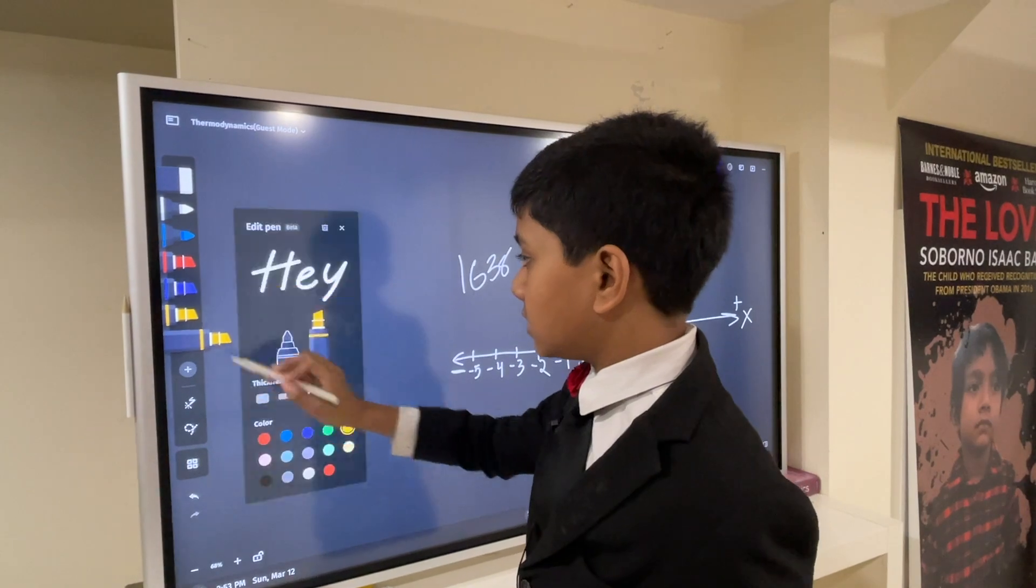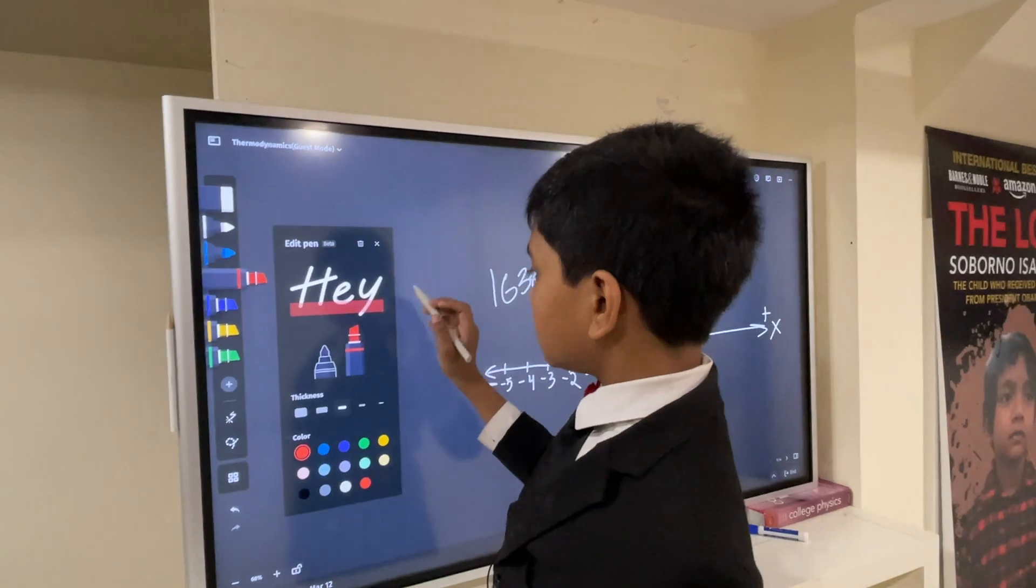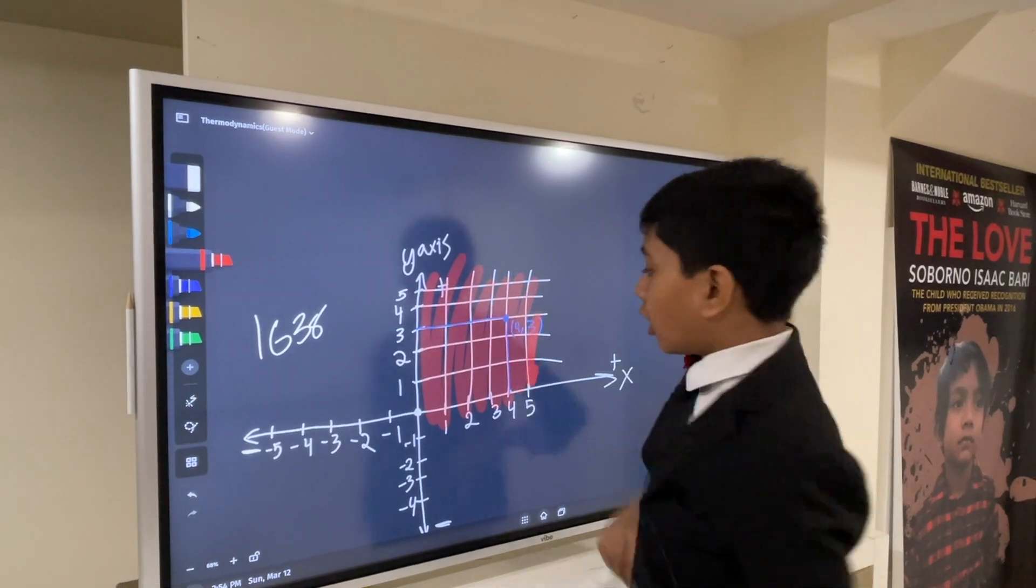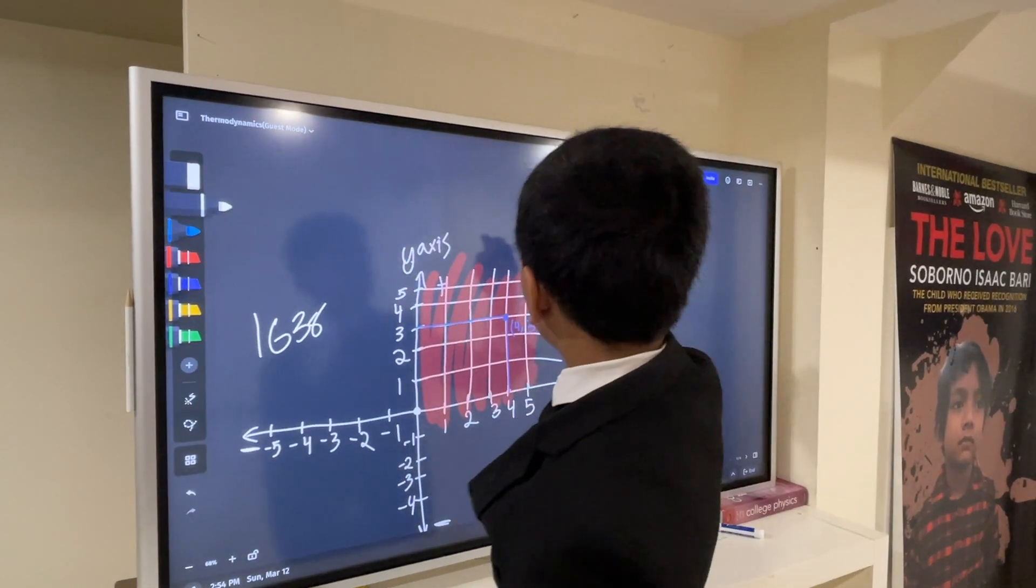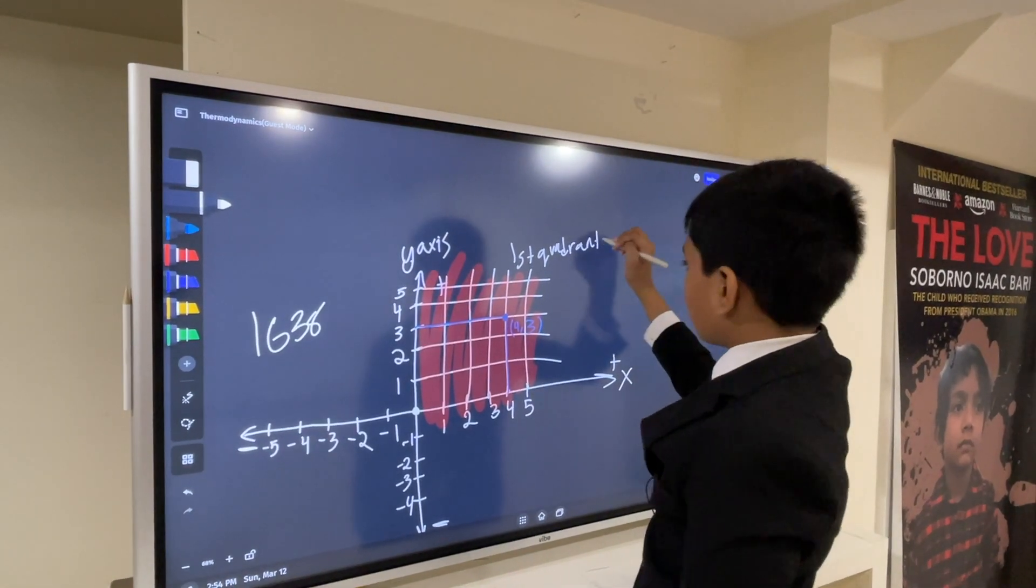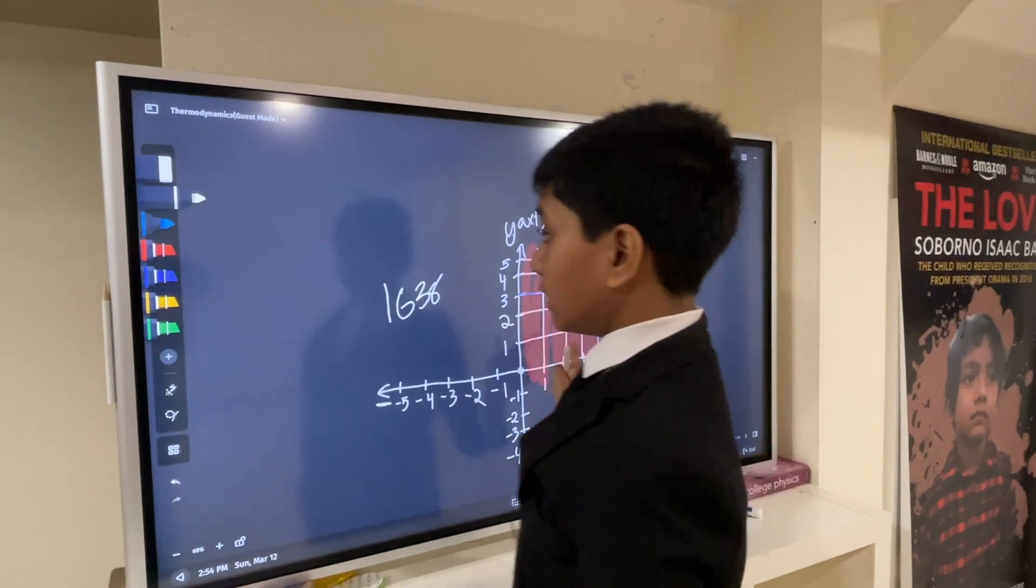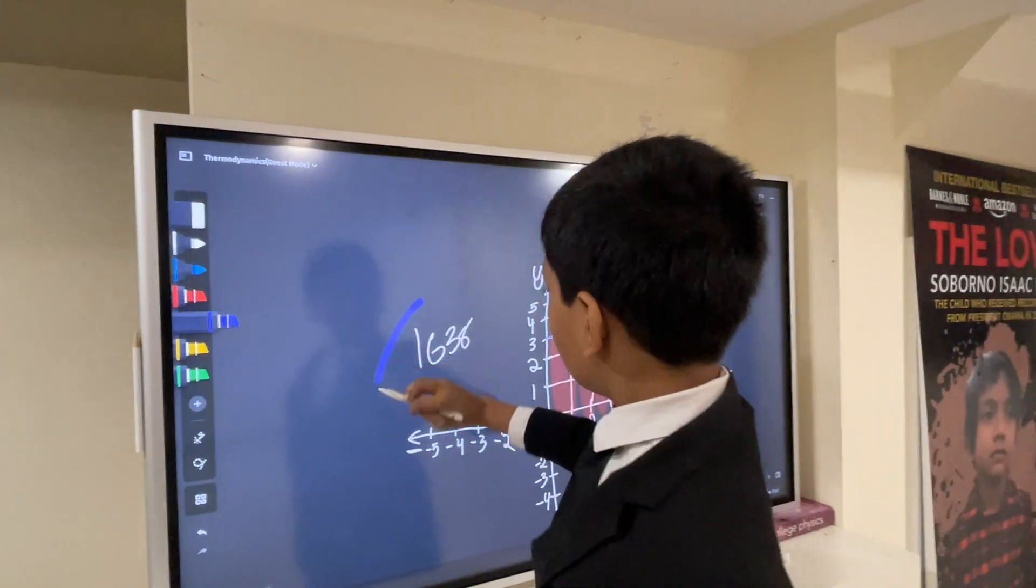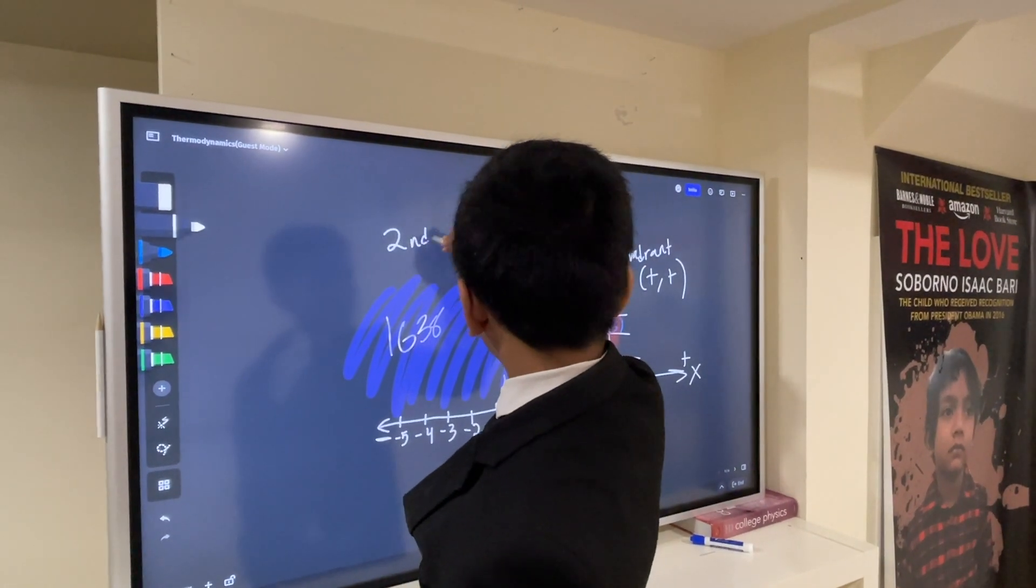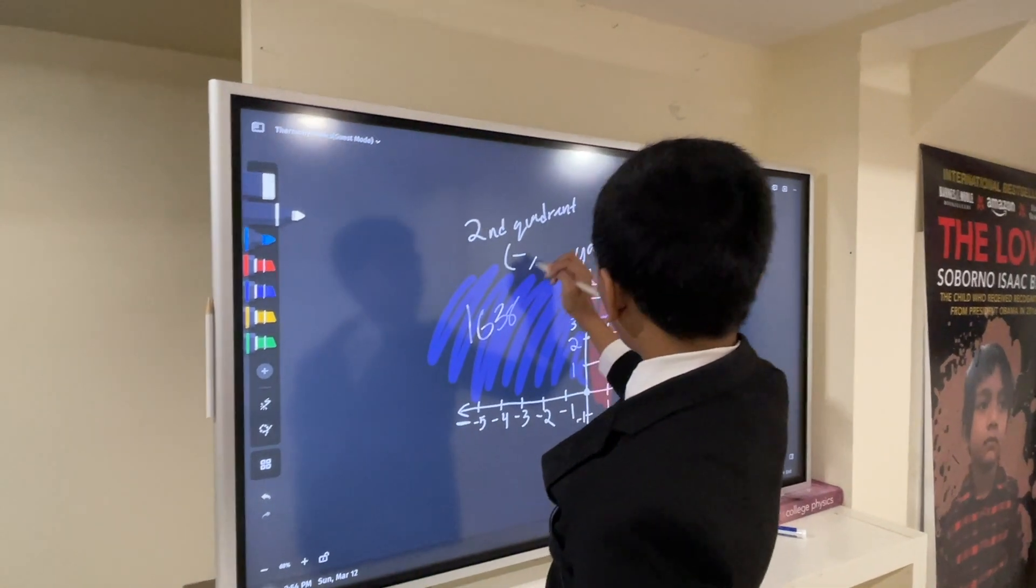And let's make this, let's say, green. So, this would be what we call the first quadrant, where both the x-coordinate and the y-coordinate are positive. This is what we would call the second quadrant, where x is negative, but y is still positive.